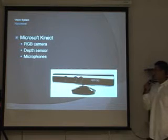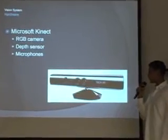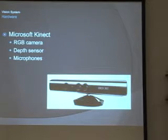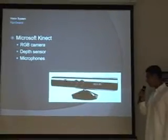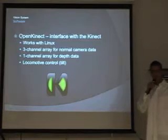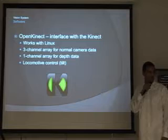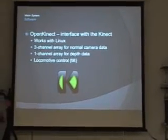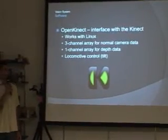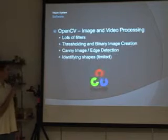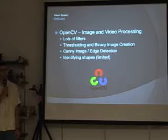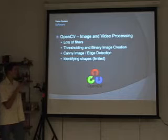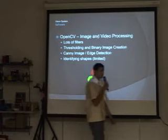Our hardware for the vision system is just the Kinect camera. It has an infrared laser and a monochrome sensor for getting a 3D image in ambient lighting conditions, a microphone array, and a small servo motor that allows it to tilt up and down, though we didn't use that for our application. The software we used for the vision part was OpenKinect, which lets you get all the data from the Kinect on any operating system, and OpenCV for image and video processing — a powerful library that includes filters, binary image creation, edge detection, and shape identification like circles and ellipses.